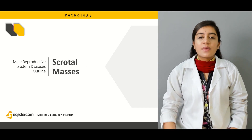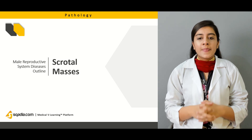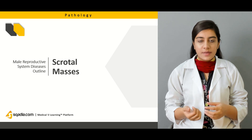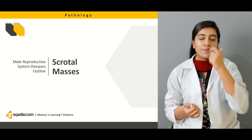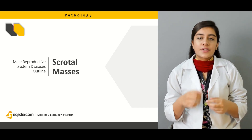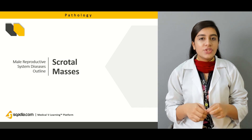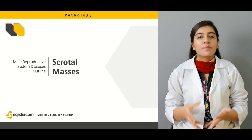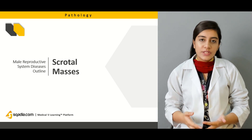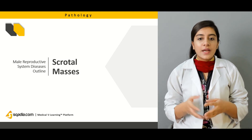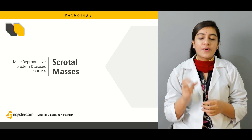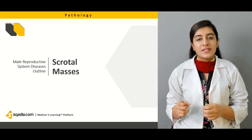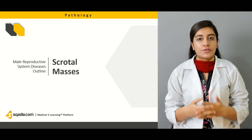Then we will be talking about scrotal masses — what they are and how they are caused. We will start with the first disease, which is hydrocele, then we will talk about spermatocele, and finally varicocele. We will cover how they appear and which part of the male reproductive system is involved in each disease.